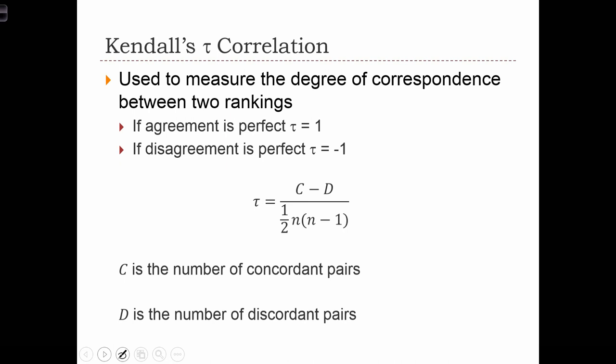Kendall's Tau, just like other types of statistics for correlation, max out at positive 1, where the agreement between the two ranks is perfect, and it goes to minus 1 when the disagreement between the two ranks is perfect.